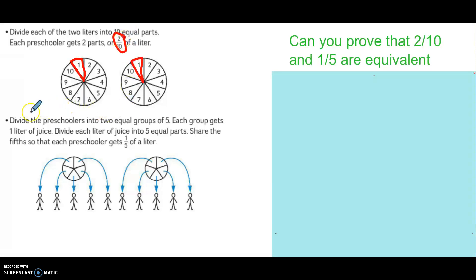Another way to do it is dividing the preschoolers into two groups of five. Give them each a liter of juice. Now the juice only needs to be divided into five equal parts, and each student will get one of these. That would be one-fifth.